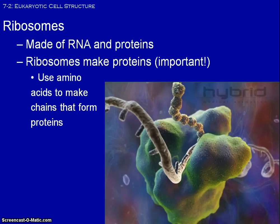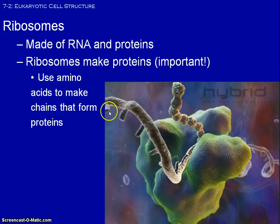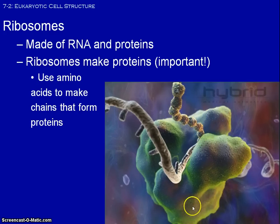Ribosomes are the next step in this whole protein synthesis model. They are these little tiny structures — they kind of look like dots when you look at them — and they put together proteins. They will read the messenger RNA, and here you can see the growing polypeptide or amino acid chain. The ribosome puts together the amino acids to form a protein.